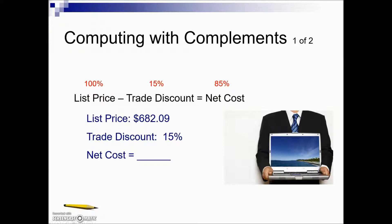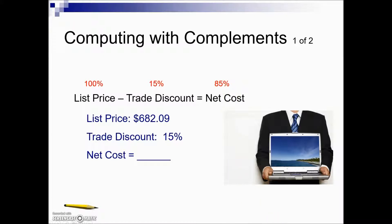So we're still doing two operations — subtraction and multiplication — but we're doing it in reverse order compared to when we were finding the actual discount and then subtracting it. By reversing it, the subtraction of the percentages is much easier than working with the dollar amounts from the trade discount calculation. Here's how this would work.